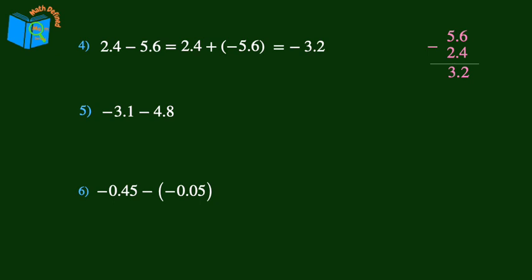Next, we have negative 3.1 minus positive 4.8. To add the opposite, we keep negative 3.1 and add the opposite, negative 4.8. Now since the signs are the same, we add and keep the sign. 1 plus 8 is 9, bring down the decimal point, and 3 plus 4 is 7, resulting in 7.9. Looking back at the decimal numbers, we see that they are both negative, so the final answer is negative 7.9.